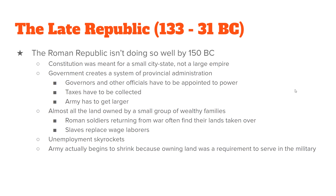The Republic started falling apart around 150 BC. The constitution and system of government Rome was using was not set up for the huge empire it had created — it was meant for a small city or a select few people. The Roman Republic had to develop a system of provincial administration, putting governors in place. The government grew in size and became much more expensive to run. Taxes had to be collected and the army had to expand.